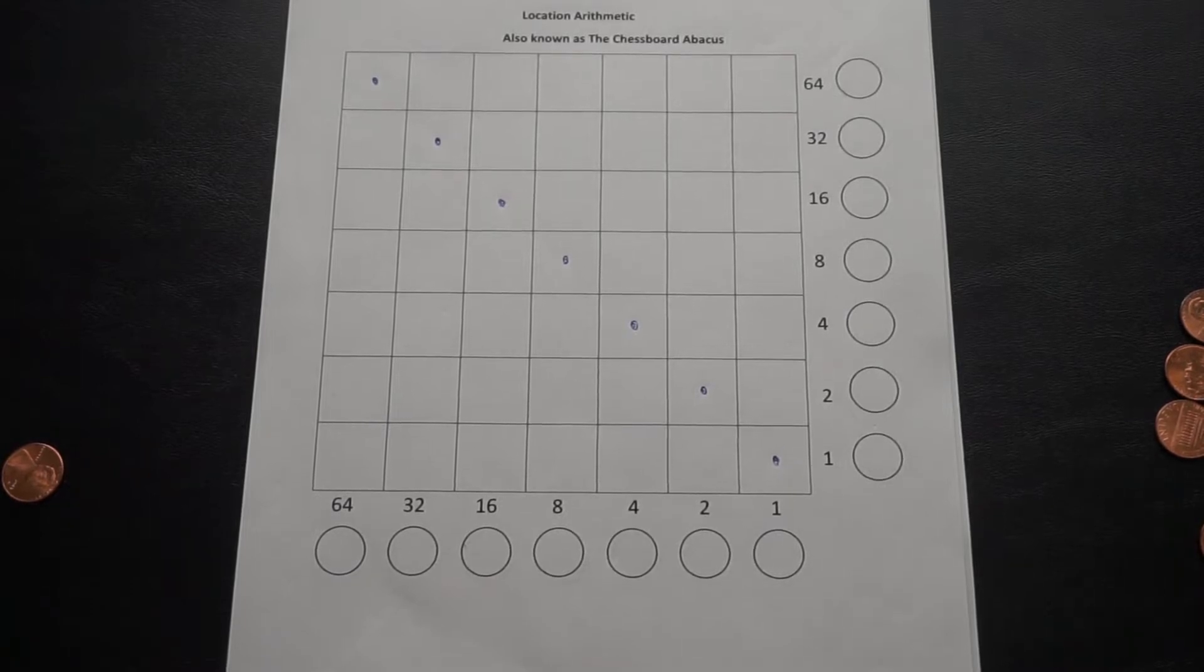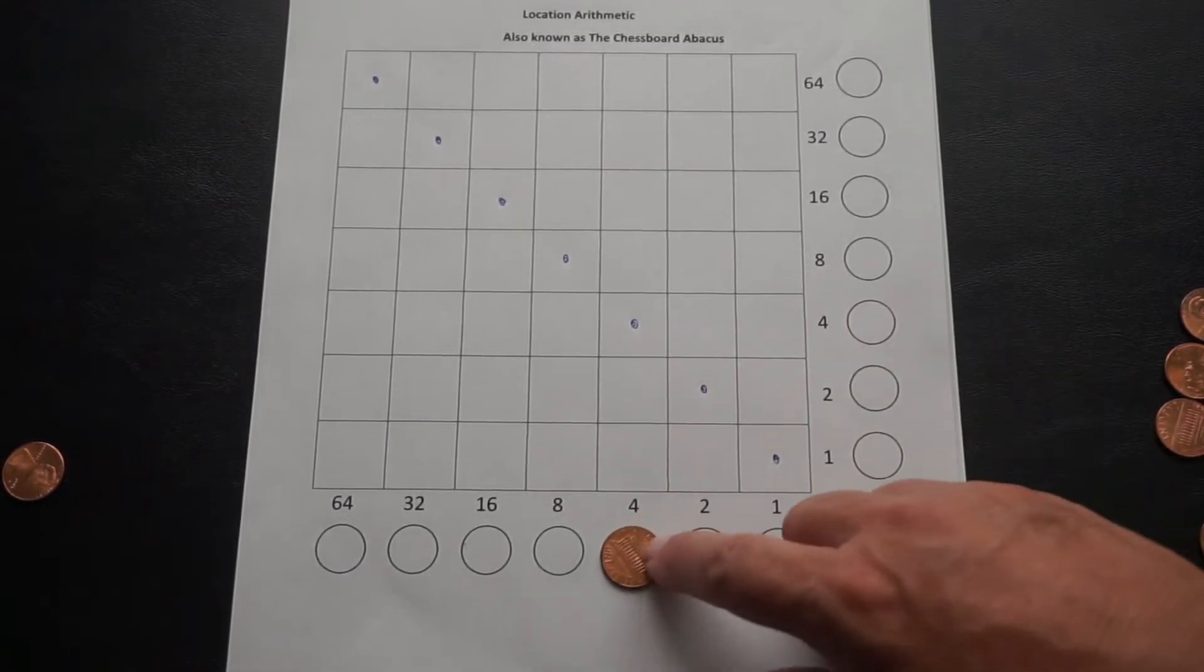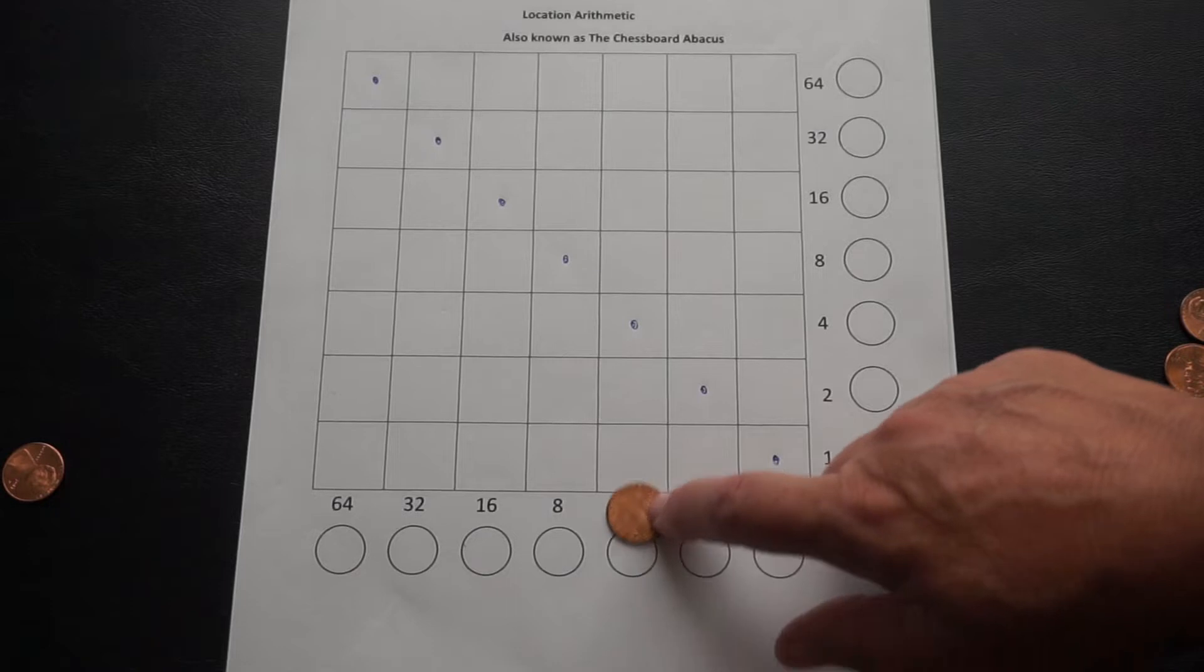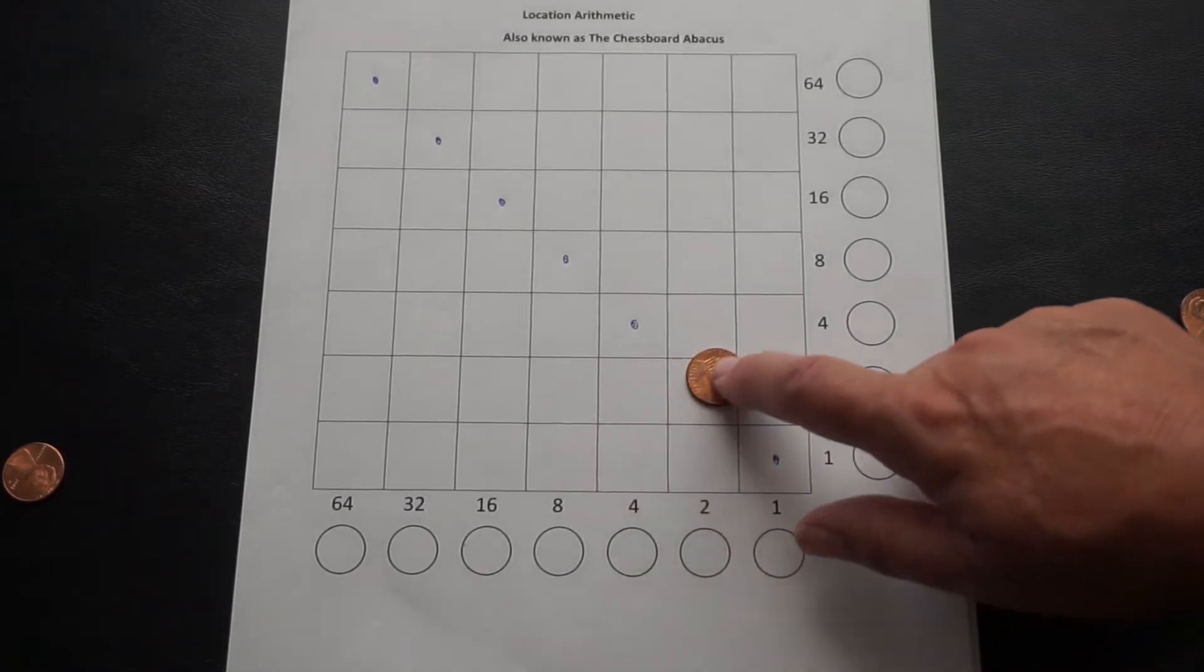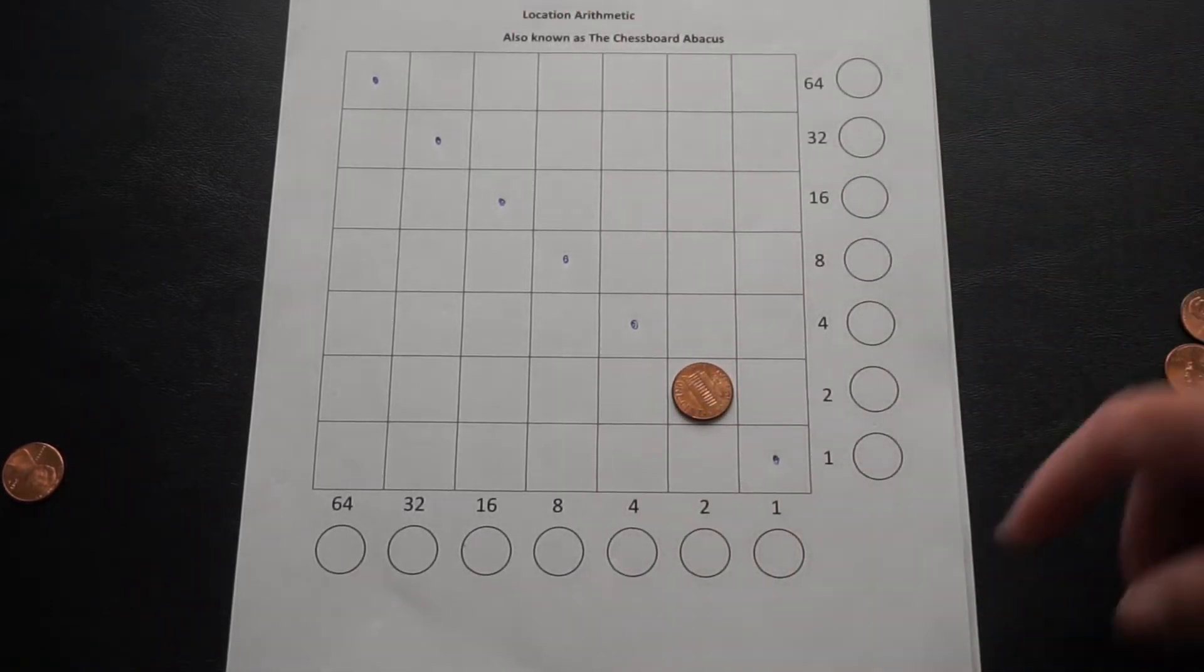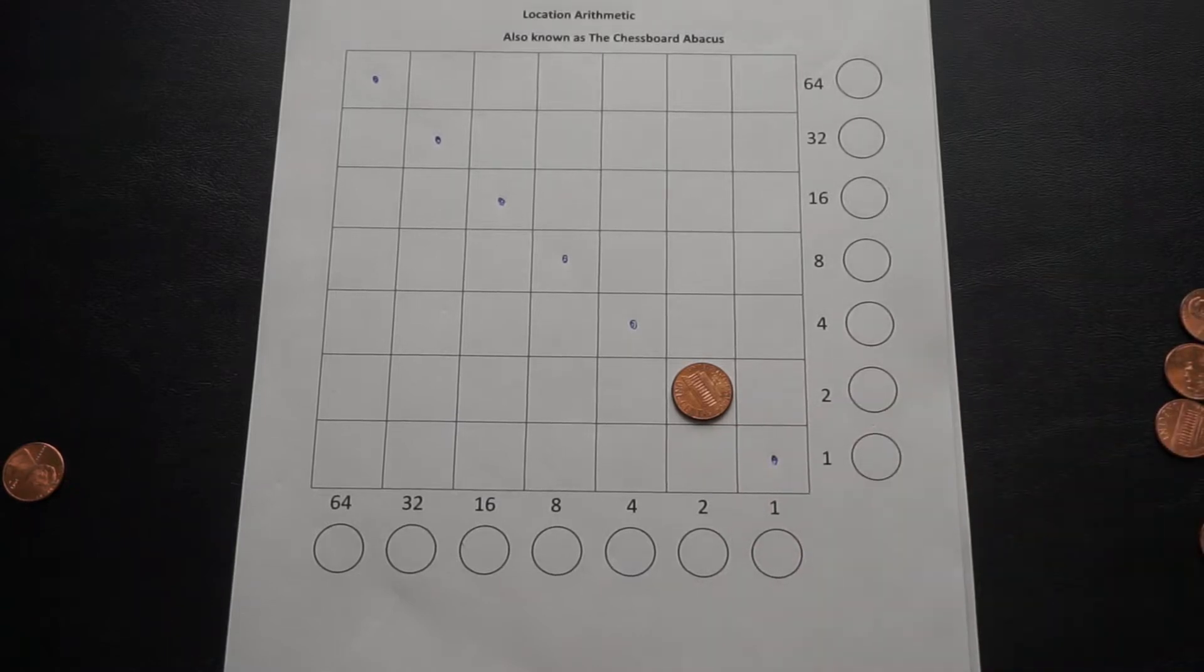Our first example is going to be very simple. We're going to take the square root of 4. We put the 4 onto the board, and we move it until it hits that diagonal that I've marked. 4 is 2 times 2. So the square root of 4 is 2. And we're done.